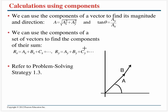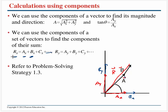When adding vectors together using components, break vector a into ax and ay, break vector b into bx and by. The resultant in the x direction is just the sum of the x-components, and the resultant in the y direction is just the sum of the y-components. Then the magnitude of the resultant is √(rx² + ry²), and you find the angle the same way as before.